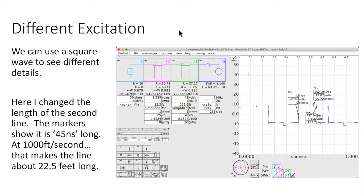Not all time domain reflectometry uses a pulse. Sometimes you can use a square wave. The advantage of a square wave is it gets you some idea of the time involved and the relative impedances. Although you can determine that from the pulses, it's easier to see with a square wave. So here I changed this second transmission line to be shorter.